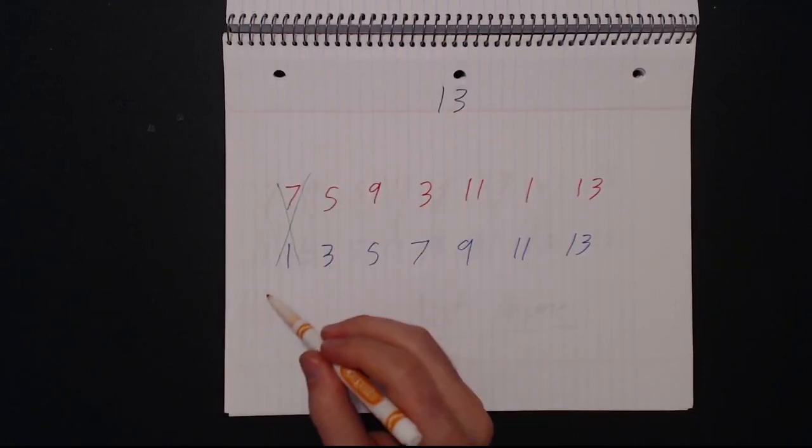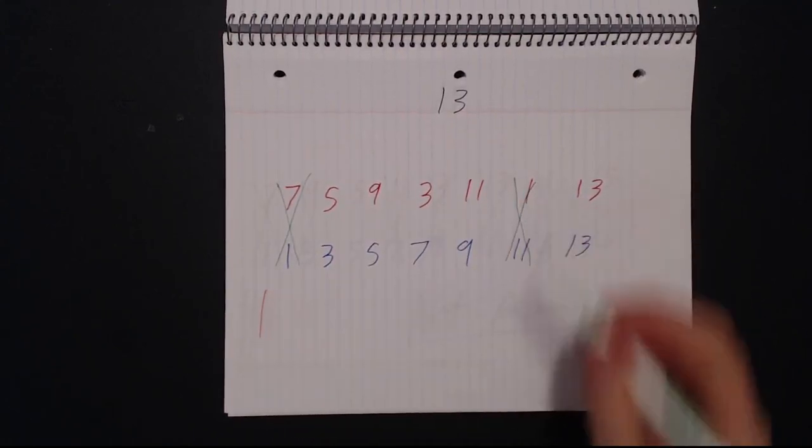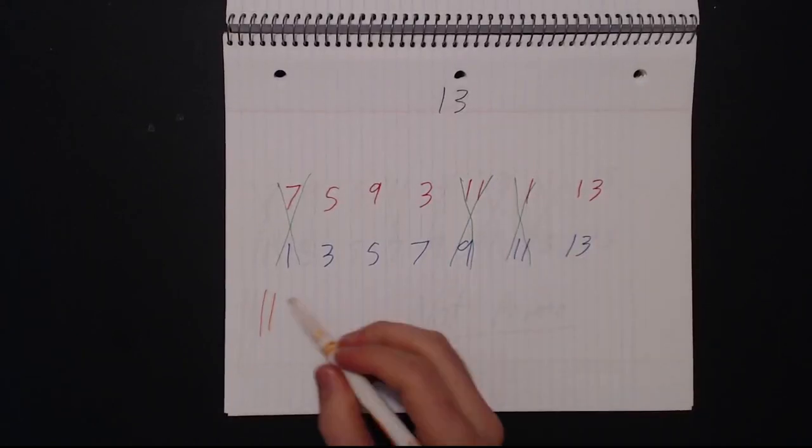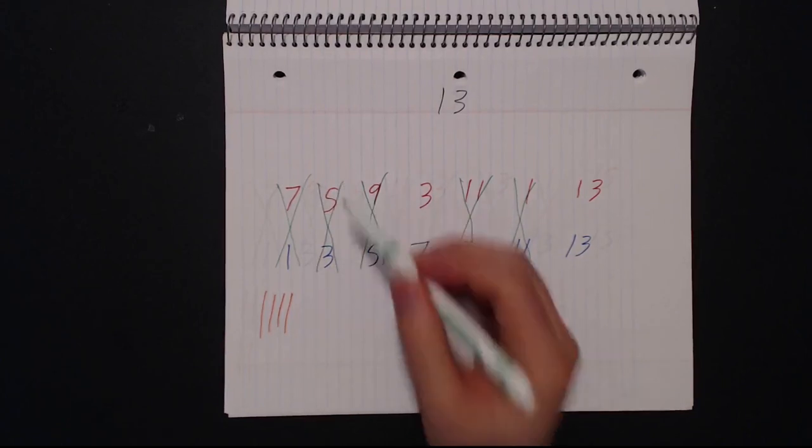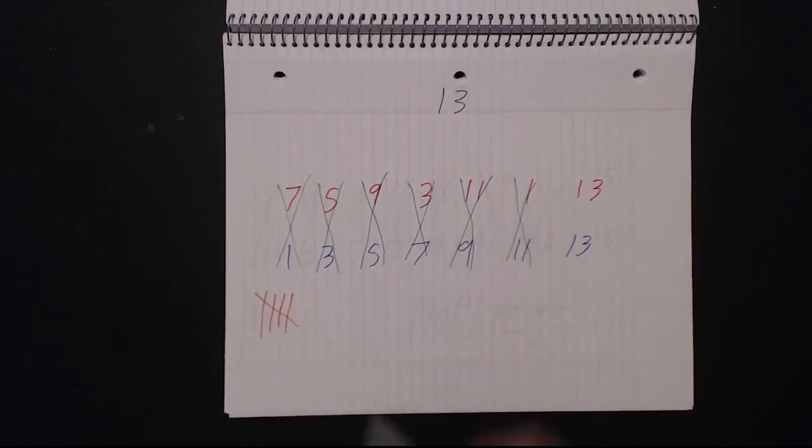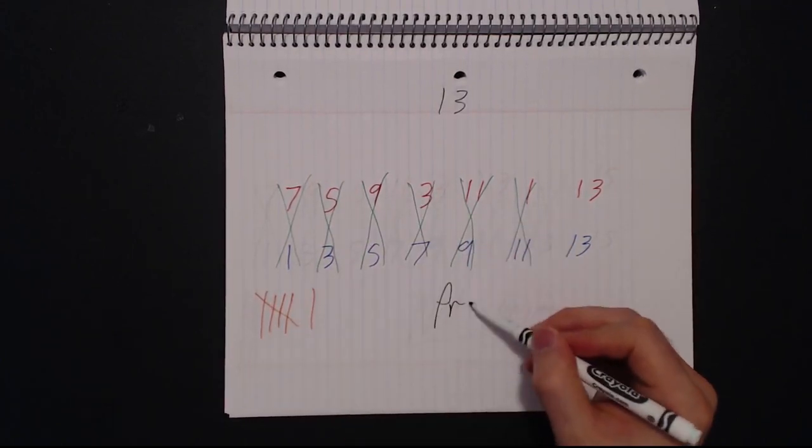Let's do another example. The number 13. Starting from the left side, following and crossing out all of the columns until you have nothing left. Again, we crossed out all of the numbers except for 13. This means it's prime.